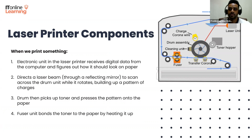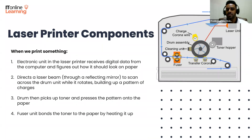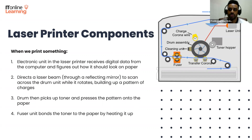When we print something, an electronic unit in the laser printer receives the digital data from a computer and figures out how it should look on paper. It then directs a laser beam through a reflecting mirror to scan back and forth across the drum unit while it rotates, building up a pattern of charges. The drum then picks up a powdered ink called toner and presses the pattern onto the paper. Finally, a fuser unit bonds the toner to the paper by heating it up.